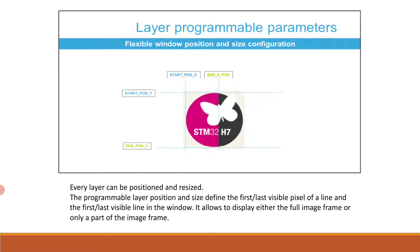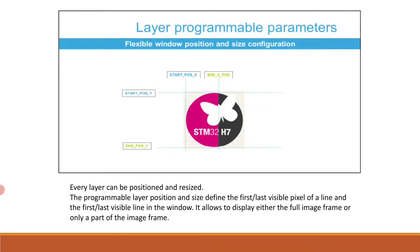Every layer has a configurable number of lines and line length for the color frame buffer, and a pitch value. The pitch is the distance between the start of one line and the beginning of the next line, expressed in bytes. The line length and number of lines parameters are used to stop the pre-fetching of data from the layer FIFO at the end of the frame buffer.